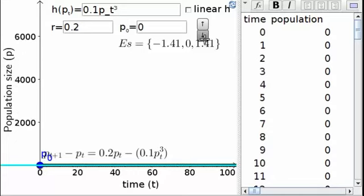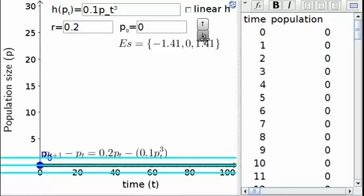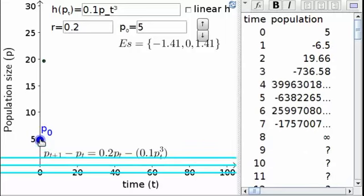For this harvesting function, there are three equilibria, and we can zoom in to see that indeed there are three horizontal lines. I'm not sure what negative population sizes are supposed to mean, but the applet dutifully calculates the values based on the formula and doesn't filter out crazy values.